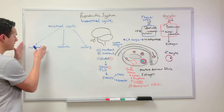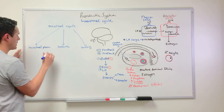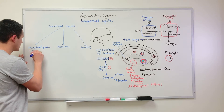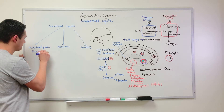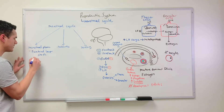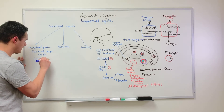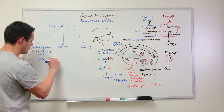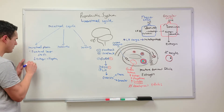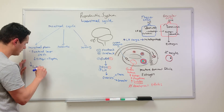During the menstrual phase, the functional layer sheds. The functional layer sheds due to the decreasing levels of estrogen and progesterone. The menstrual phase occurs at the end of the luteal phase.